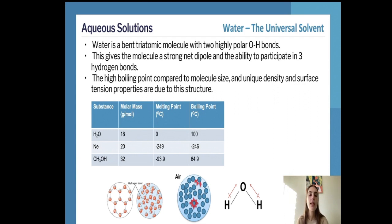Water has a very high boiling point and melting point in comparison to other substances, despite those substances having a larger molar mass. For example, H2O has a molar mass of 18, a melting point of 0°C, and a boiling point of 100°C. The next molecule, with a molar mass of 20, is a single atom (neon), so it actually has a very low melting and boiling point despite its larger molar mass.